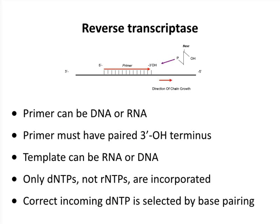Reverse transcriptase is a nucleic acid polymerase with a few unique properties. The primer can be DNA or RNA and must have a paired 3'-hydroxyl terminus. The template can be RNA or DNA — once RT makes a single-stranded DNA copy of the RNA, it also makes that double-stranded. It uses deoxy-NTPs, not rNTPs, so it makes only DNA. The correct NTP is selected by base pairing, as with all polymerases.